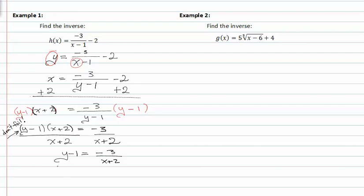Now that I have y by itself on one side of my equation, I can add one to both sides, and I get y is equal to negative three over x plus two plus one.